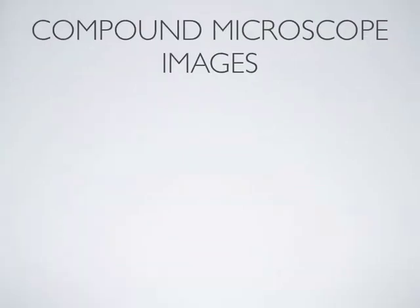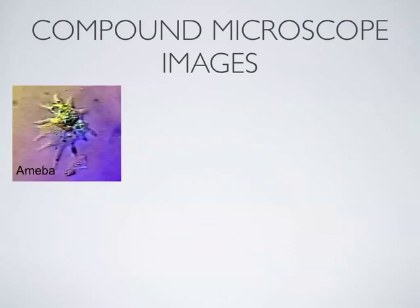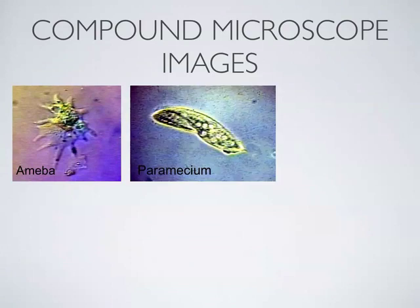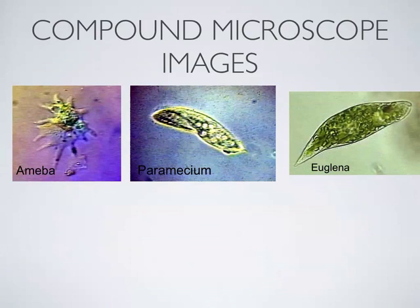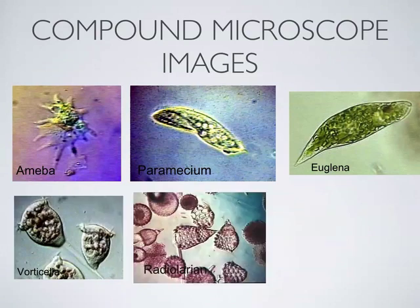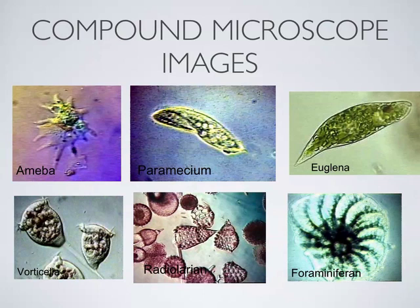Let's look at a few different images of things seen under these types of microscopes. For the compound microscope, you generally get a two-dimensional view of the object. Here's an amoeba — we'll see those later this year — paramecium, euglena. Those are all single-celled organisms, protists. Some more: corticella, radiolarins, and foraminiferans. All living organisms seen under a compound microscope — you see kind of just a flat image.